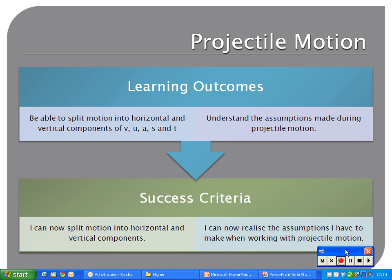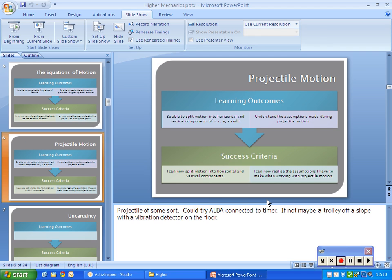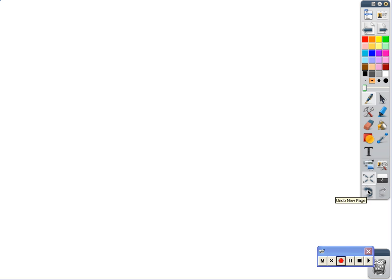Another thing here is understand the assumptions made during projectile motion. We'll look at these assumptions as well. Let's look at the projectile motion. We've got our projectile. Let's say it's a projectile on a flat plane like this. It's a ball of some sort. It goes up like this, and down like this, and it finishes at point here.